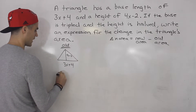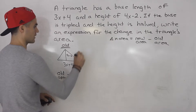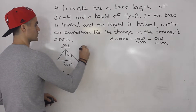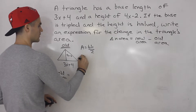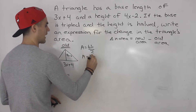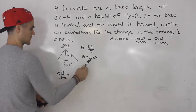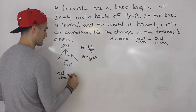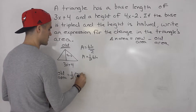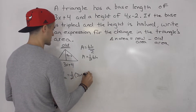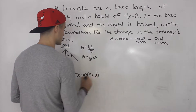So the old area — what's the area of a triangle in general? It's base times height divided by 2, or we can rewrite it as one half times base times height. So the old area is one half times the base (3x plus 4) times the height (4x minus 2).